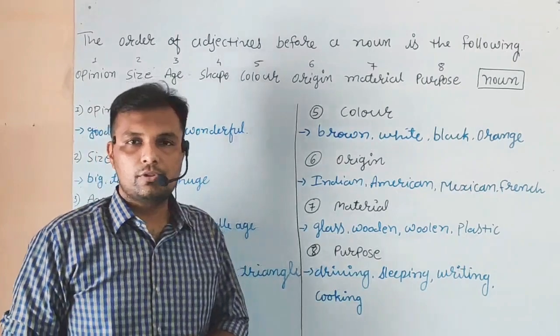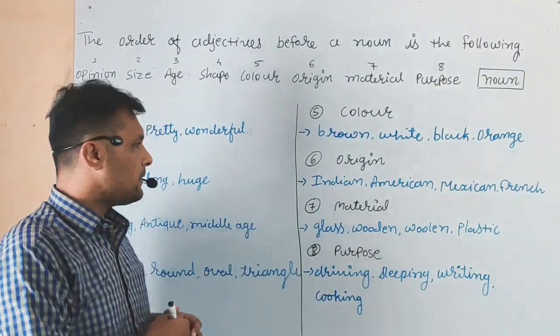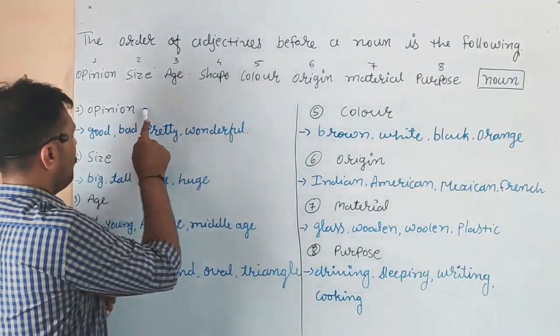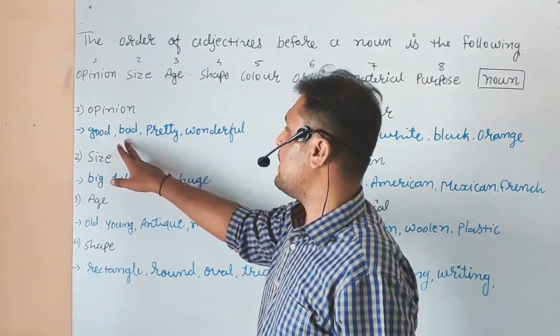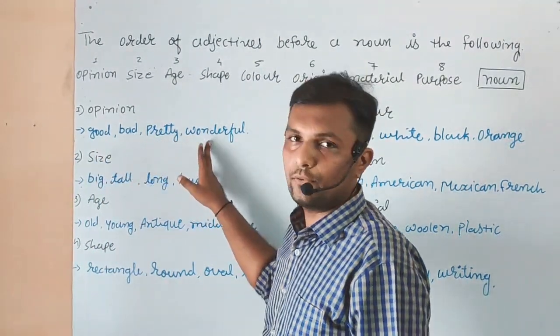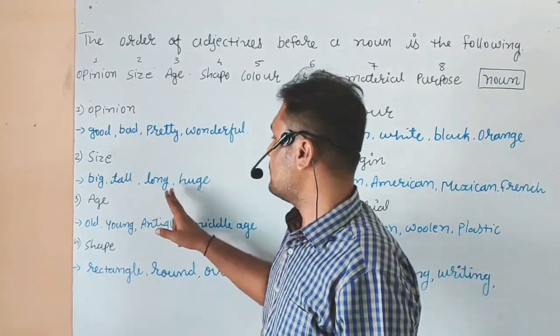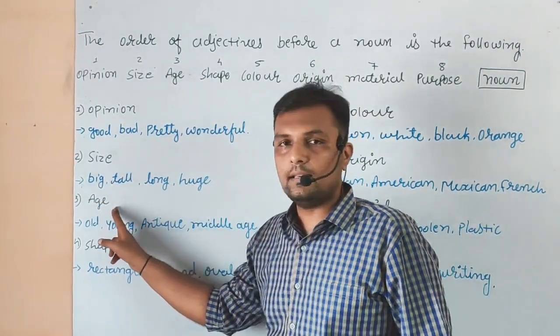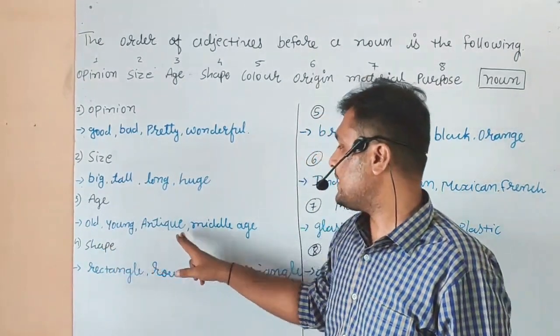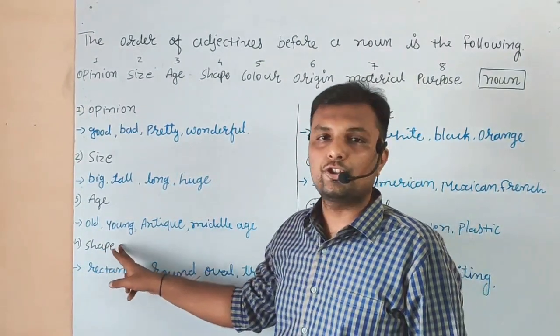Some examples over here on the board. Opinion: good, bad, pretty, wonderful. Size: big, tall, long, huge. Age: old, young, antique, middle age. Shape: rectangle, round, oval, triangle.